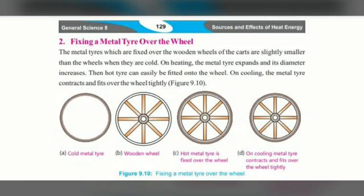Now I am going to read: fixing a metal tire over the wheel. The metal tires which are fixed over the wooden wheels of the carts are slightly smaller than the wheels when they are cold. These are carts which are used for transportation, pulled by a person or an animal.